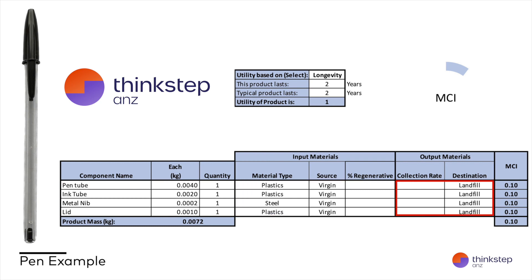We're going to assume that the pen will be thrown in the bin at the end of its life and end up in a landfill. We're also going to assume that our pen lasts for two years until it's thrown out and that this is generally the case for pens of this type. The pen is very linear in this case and has an MCI of 0.1, indicating a linear product that hasn't decoupled from using non-renewable materials or producing waste. We can also see that the circularity of each of the components is also 0.1.